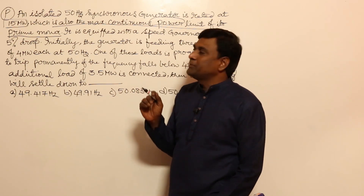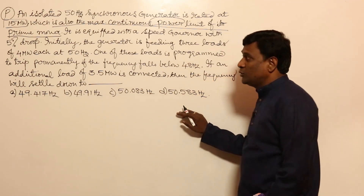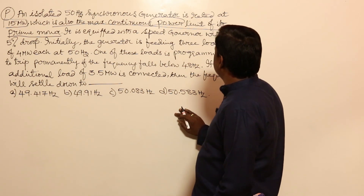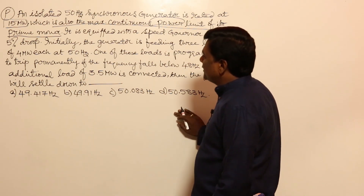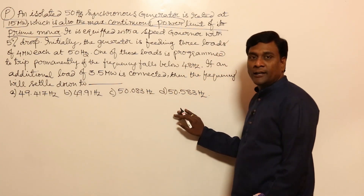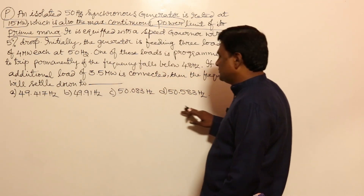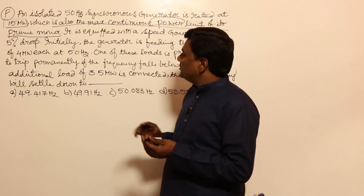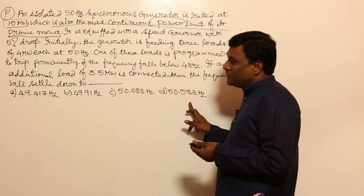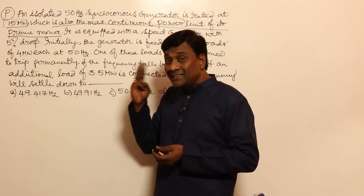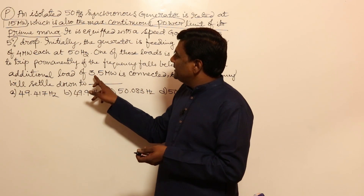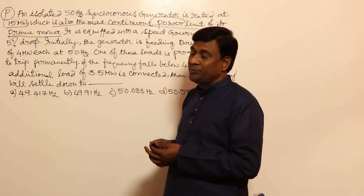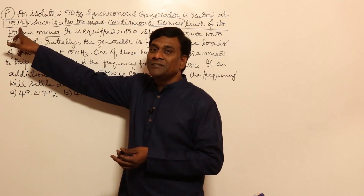The 15 MW generator has five percent droop characteristics. Initially the generator is feeding three loads of four megawatt each at 50 Hz. One of these loads is programmed to trip permanently if frequency falls below 48 Hz. An additional load of 3.5 megawatt is connected, so total load is 3×4 + 3.5 = 15.5 megawatt, exceeding the maximum capacity of 15 megawatt.